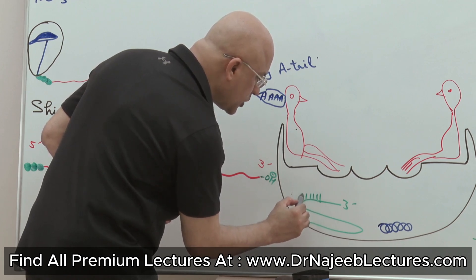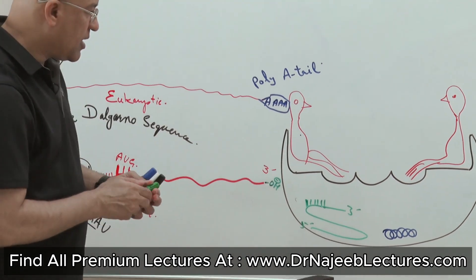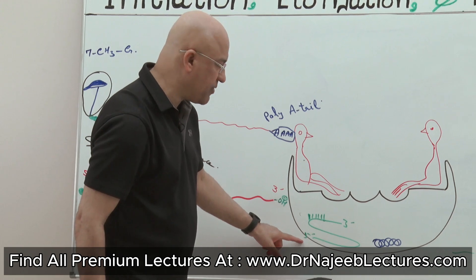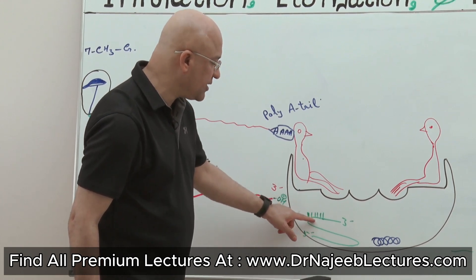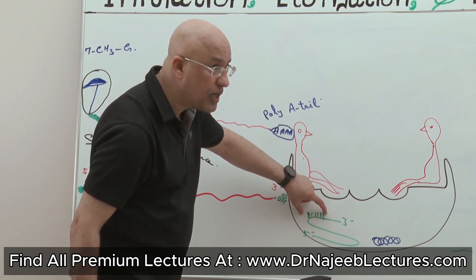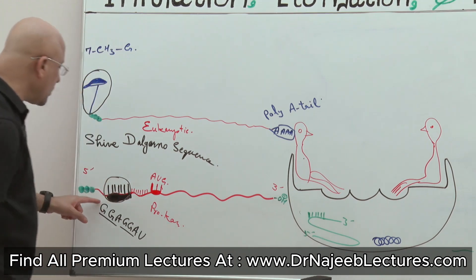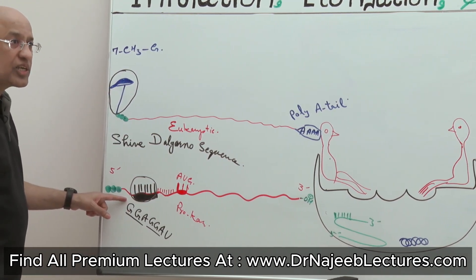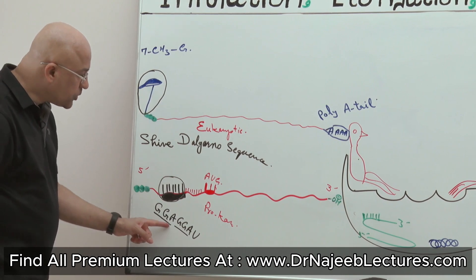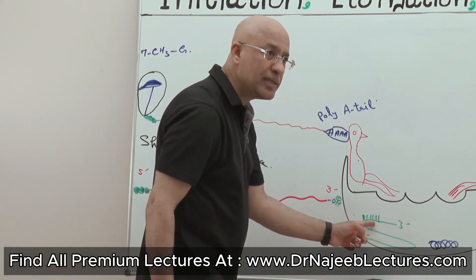This is the 16S ribosomal RNA, which has a 3' end and a 5' end. Near its 3' end, it has a special nucleotide sequence which is complementary to the Shine-Dalgarno sequence. This means if the Shine-Dalgarno sequence is purine-rich, then this area should be pyrimidine-rich.